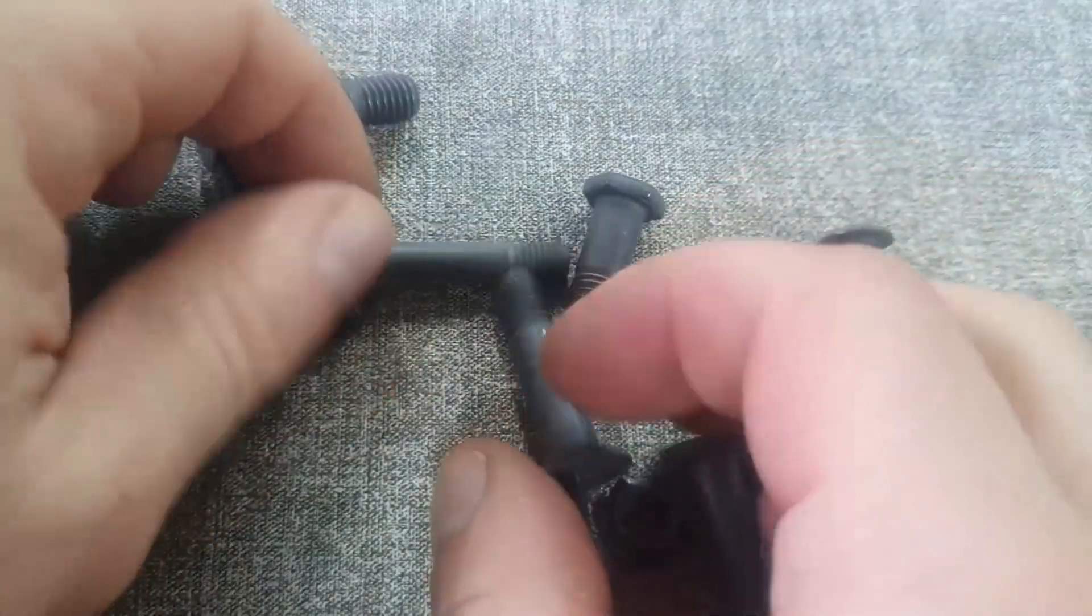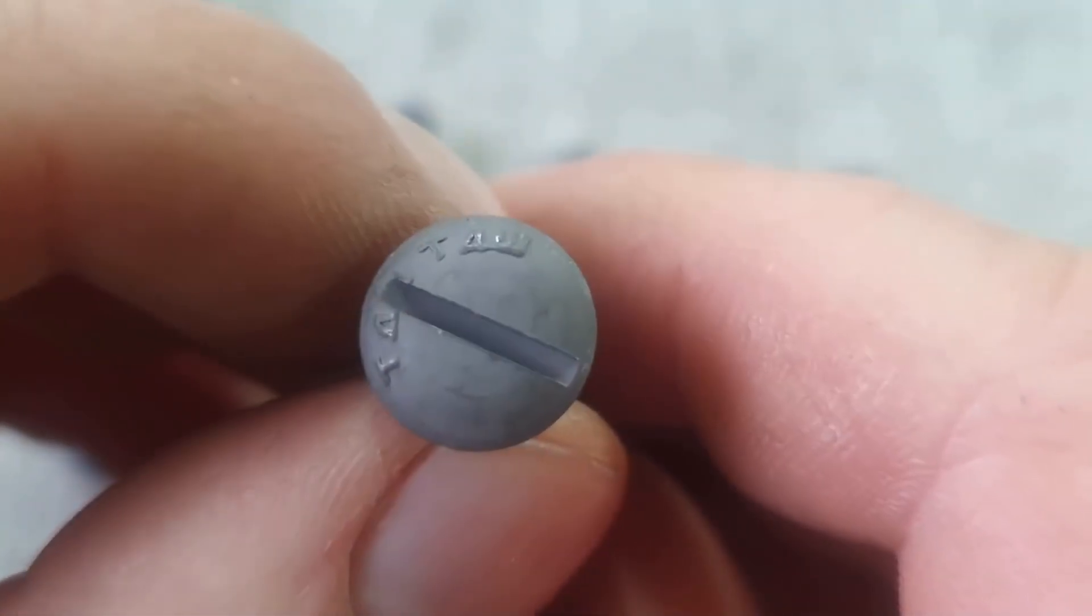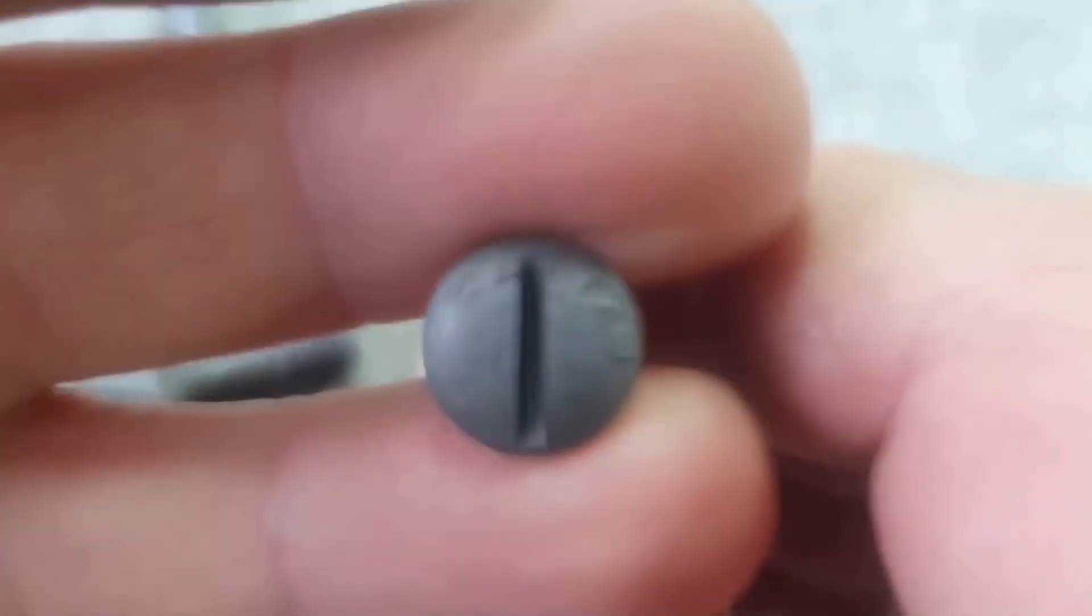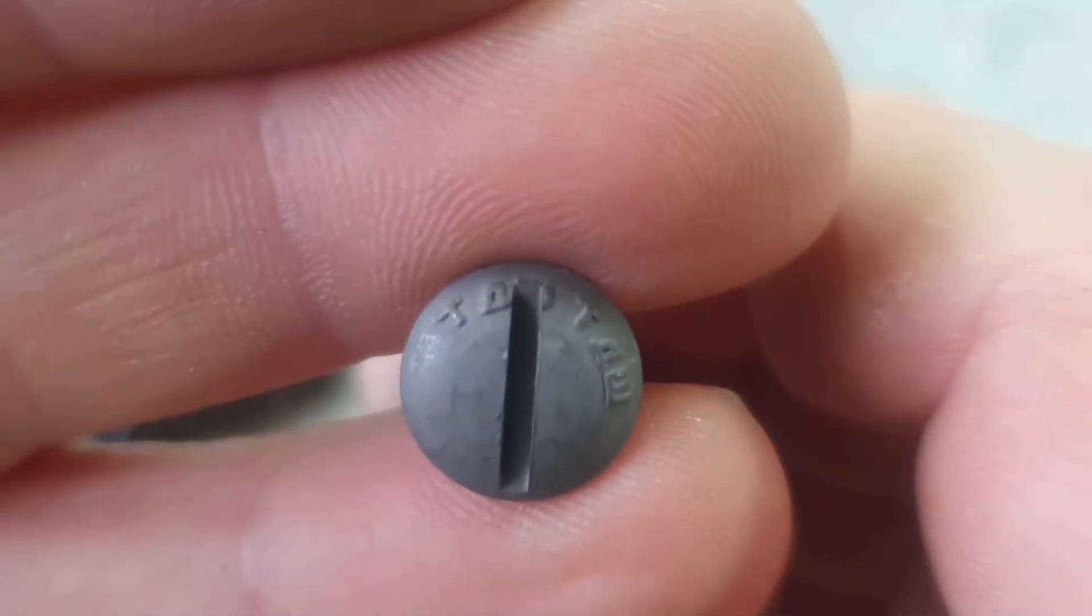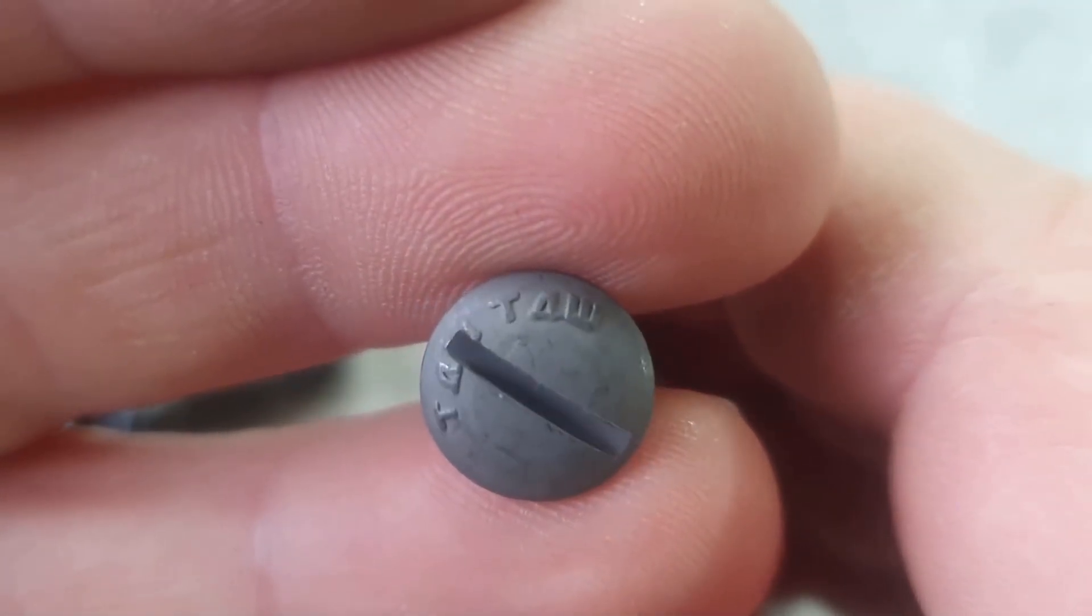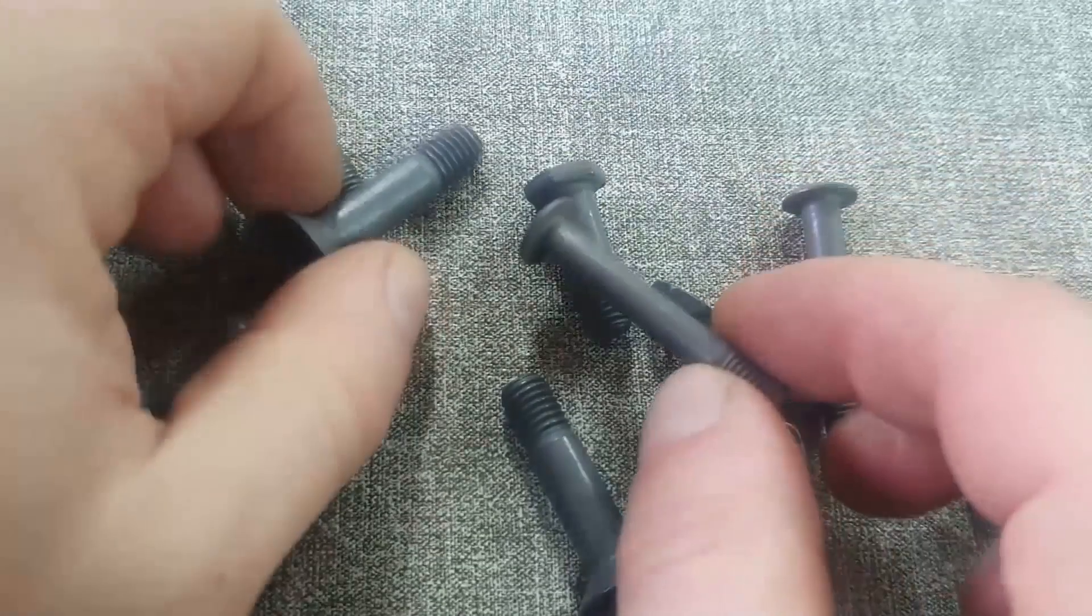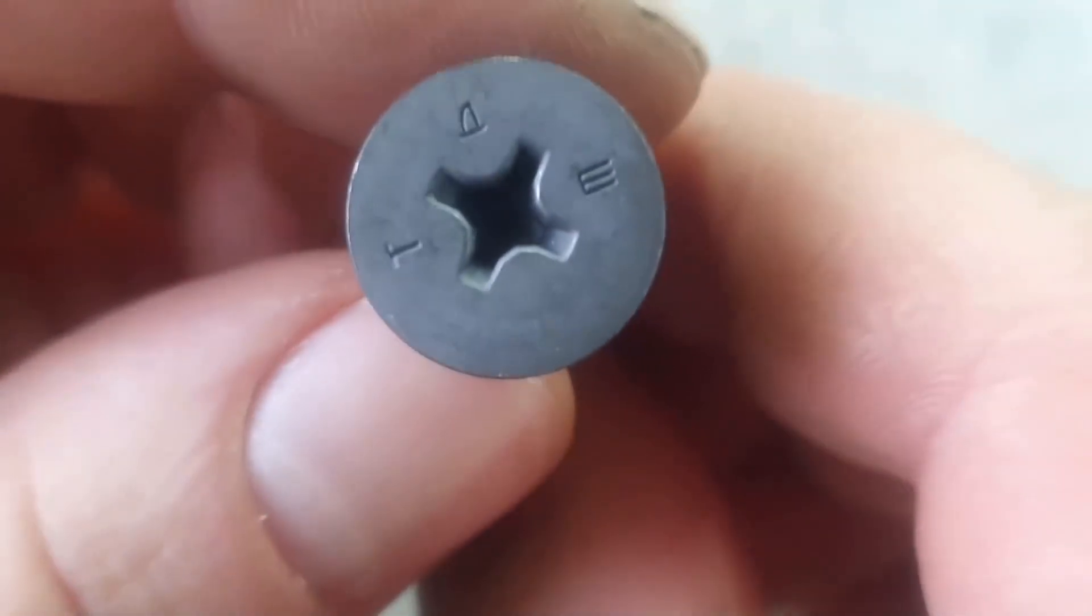Let's take a closer look at them. Each bolt head has encrypted markings indicating their strength. They're marked quite differently, unlike steel bolts. All these bolts come in two diameters, with M6 and M8 threads.